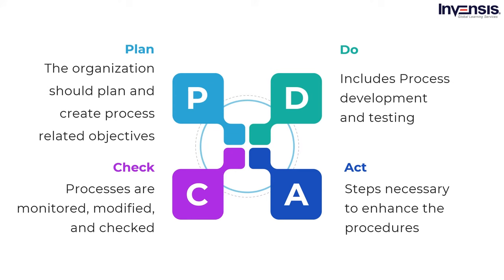Let's look into the QA process steps in detail. Plan: the organization should plan and create process-related objectives and the processes necessary to achieve a high-quality final result. Do: process development and testing, and then also doing modifications to processes. Check: processes are monitored, modified, and checked to see if they achieve the intended goals. Act: a quality assurance tester should take the steps necessary to enhance the procedures.